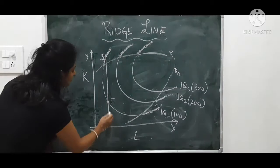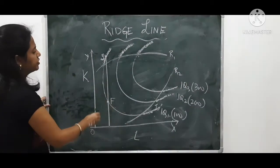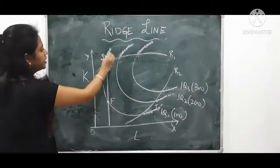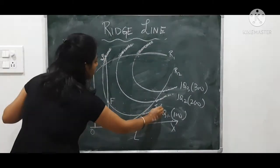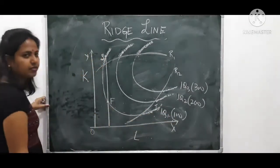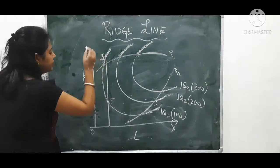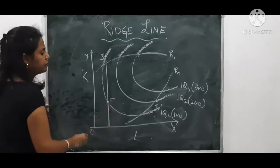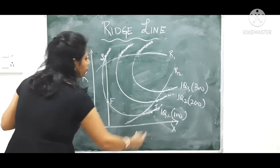Remember what is the difference? S and F they fall in the same isoquant which can produce 100 units. That means whether you are at S combination or F combination of capital and labour, it will produce 100 units.